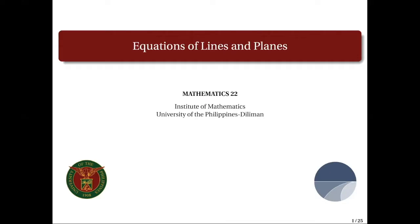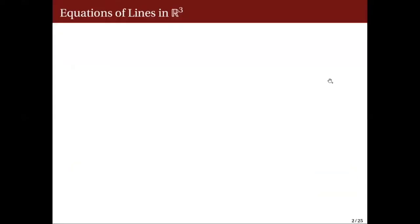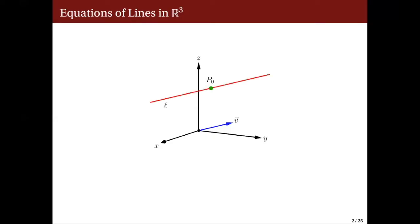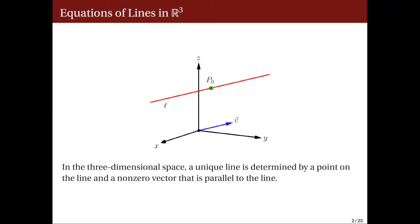To answer this question, let us consider the following illustration. Consider a non-zero vector v with the following position representation. There are infinitely many lines parallel to v, but among those infinitely many lines, there is exactly one line parallel to v that contains the point p0. This tells us that in the three-dimensional space, a line is uniquely determined by a point on the line and a non-zero vector parallel to the line — called a direction vector for the line.